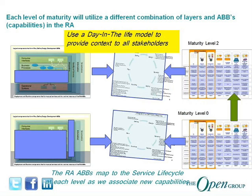Each level of maturity will use a different combination of layers and architectural building blocks to realize a given target level of maturity. You may start by defining a certain set of simple services and realizing them, then add the integration layer with an enterprise service bus, then add business processes and choreograph your services to get to level five. It's essential to have that roadmap — an assessment of where you are, where you want to be as your target state — and then pick and choose the architectural building blocks from the SOA RA needed to realize that end state. That's really the main import of what we are communicating today.